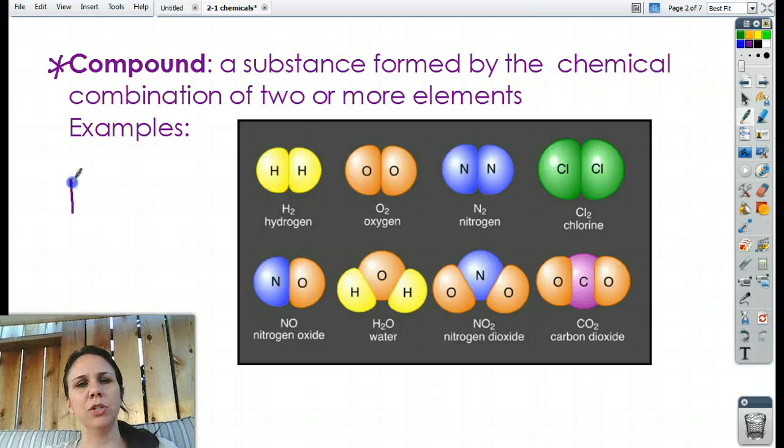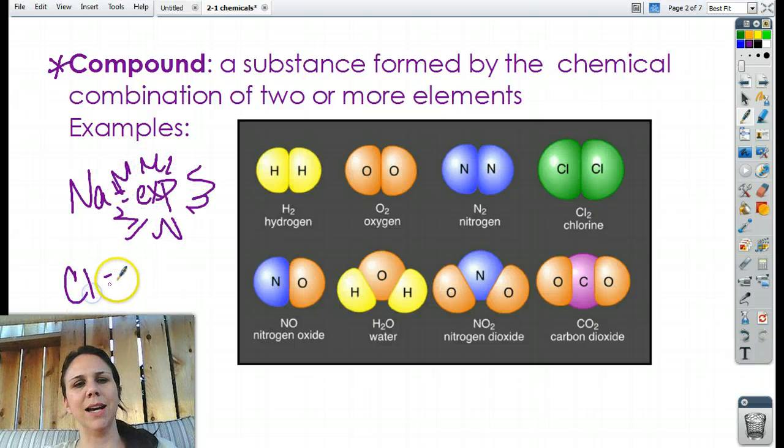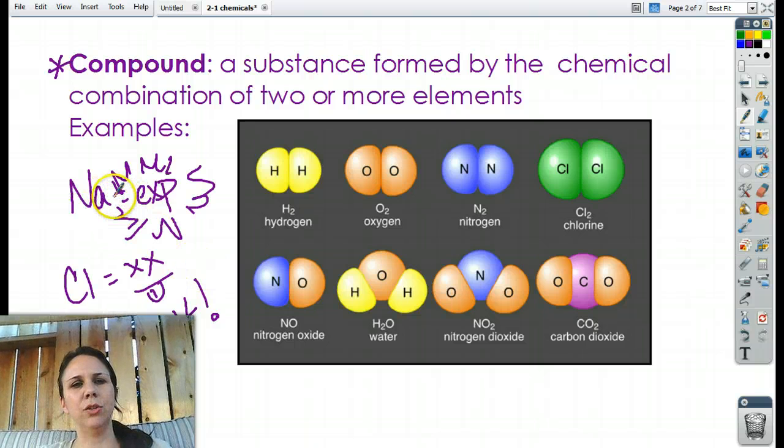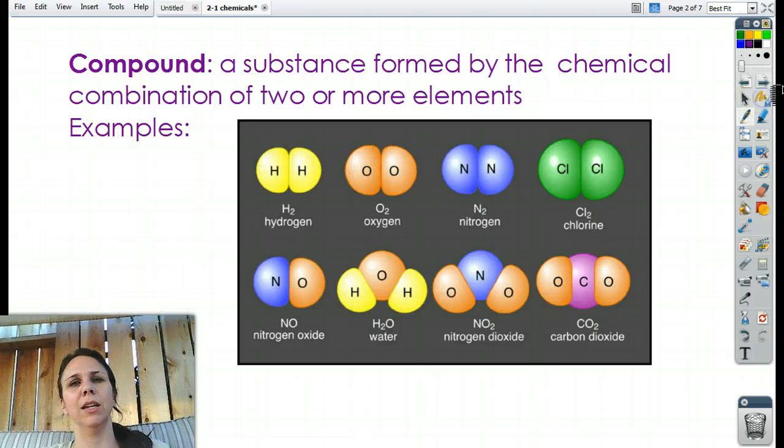So, for example, sodium, Na, is highly explosive, a big boom, whenever it touches water. And then we have chlorine gas, which will pretty much kill you if you inhale any of it. But when I put it together, what do I get? NaCl, yummy, yummy salt. So it's kind of interesting how we can take two different atoms, but when we put them together in a compound, they turn into something completely and utterly different.